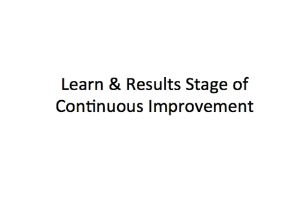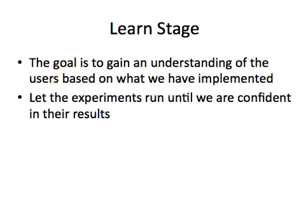Today we're looking at the learn and result stage of continuous improvement. In the learning stage, the goal is to gain an understanding of the users based on what we've implemented. You've gone through the planning stage where you've identified what you want to do. You've gone to the build stage where you've actually built some functionality for your website, or maybe you've designed something for your marketing as an example. You're now going to keep this experiment live — we call everything experiments in the growth-driven design process — until we are confident in the results, whether the experiment has worked or whether it has not worked and we need to change it or roll back to what was there before.